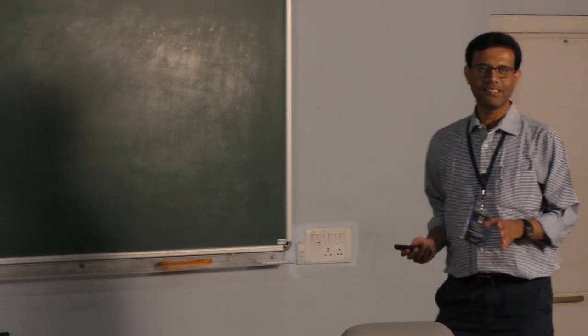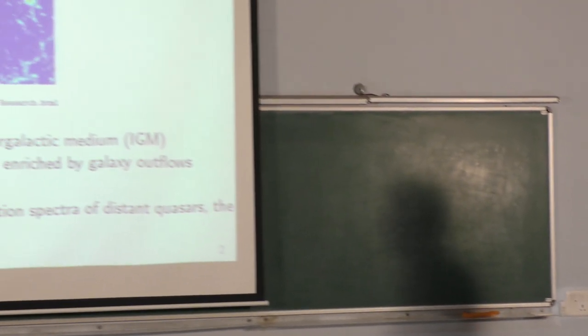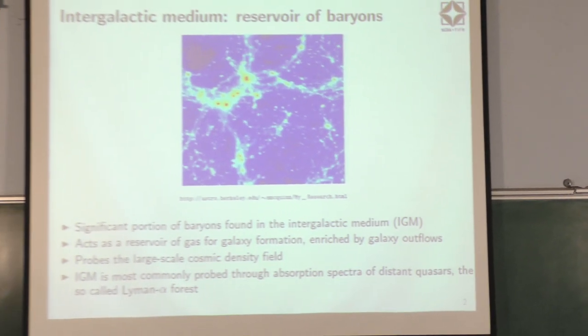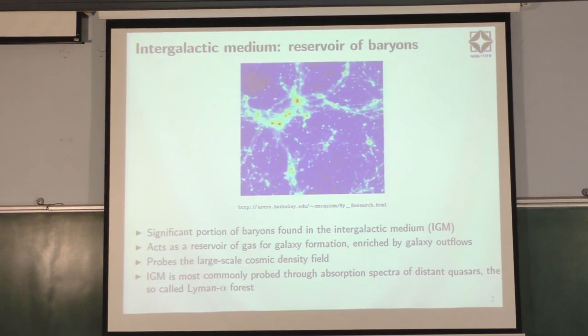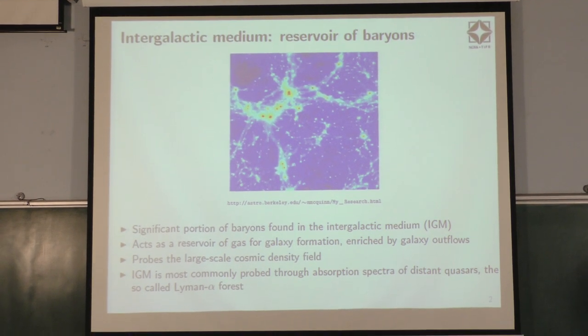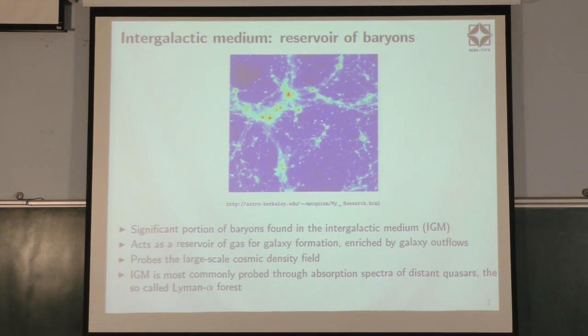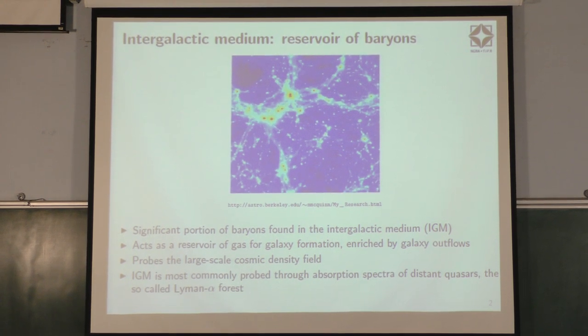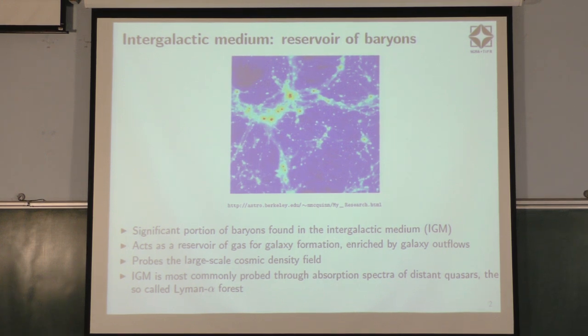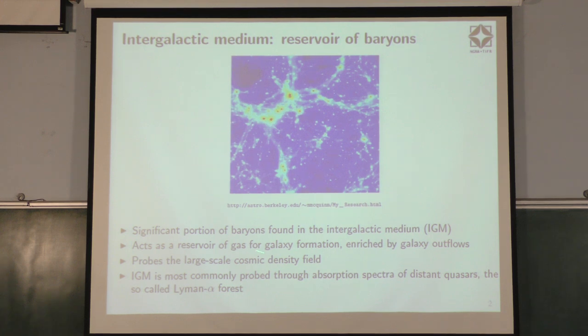The intergalactic medium essentially is a reservoir of baryons in our universe. Most of the baryons is actually found in the intergalactic medium. It could be as high as more than 90% at high redshifts, around redshifts of two and three. It's of the order of 60% at the present epoch. Obviously it acts as a reservoir of gas for eventual galaxy formation. So it's very crucial to understand the intergalactic medium.